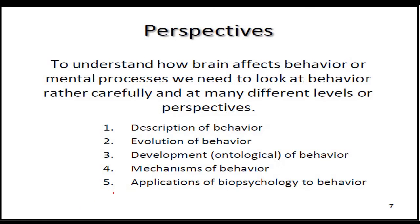Now, how is physiological psychology studied? There are different perspectives. Number one is the description of behavior — you should know how to describe or report a certain behavior. Number two is the evolution of behavior, where an event may be explained through its evolutionary origins. Number three is the development of behavior through time. Number four is the mechanism of behavior. And number five is the application of biopsychology — the study of anatomy and physiology in relation to behavior. These five perspectives are applied to explain a certain behavior, sometimes all together, sometimes only one.